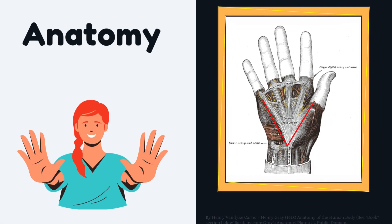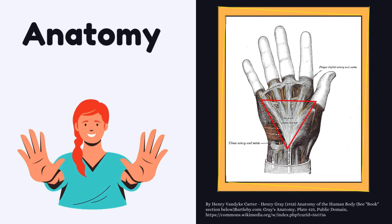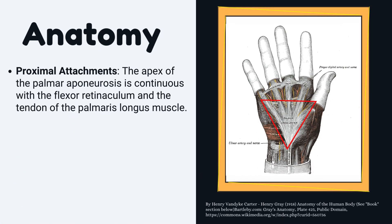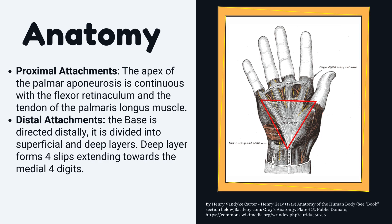Regarding proximal attachments, the apex of the palmar aponeurosis is continuous with the flexor retinaculum and the tendon of the palmaris longus muscle.